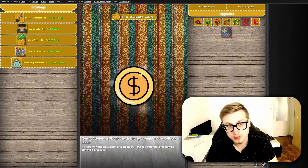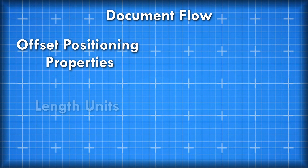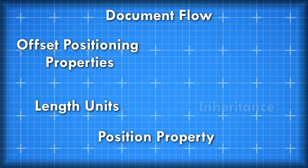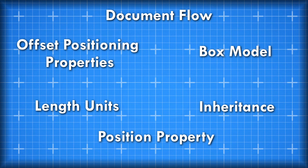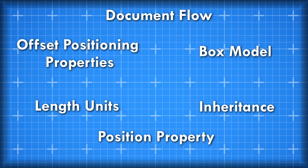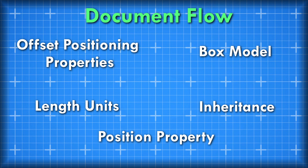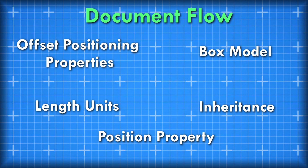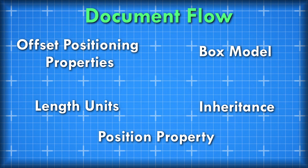CSS positioning consists of several key concepts that you need to understand in order to grasp it as a whole, which we will also take a look at in detail during this video. The first concept you need to understand is the concept of document flow, and this explains the order in which elements are rendered on the screen.